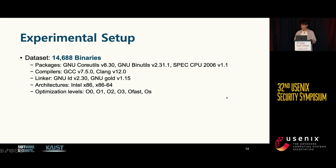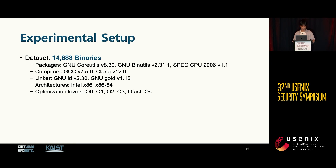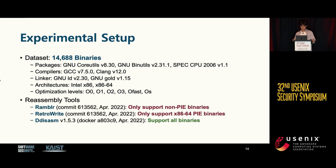Now let me present our evaluation. Our dataset includes coreutils, binutils, and SPEC CPU benchmark binaries. We created our dataset with various combinations of compiler, linker, architectures, and optimization levels. For the evaluation, we selected three state-of-the-art reassembly tools: Ramblr, RetroWrite, and DDISASM. It is important to note that these tools support different sets of binaries, so we utilized only a subset of binaries for each tool.